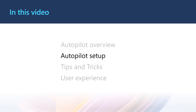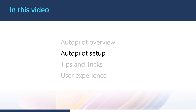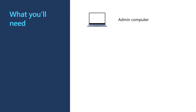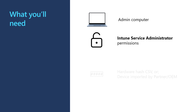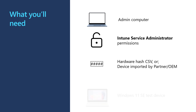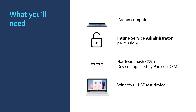Now that we know what it is and what we need before we get started, let me show you how we can configure Autopilot in Intune to make this a reality for our Windows 11 SE laptops. If you want to follow along with this walkthrough, you'll need a computer to configure Autopilot, an account with Intune service administrator permissions, a hardware hash for your Windows 11 test device or have them imported by a partner, and some Windows 11 SE test devices to test on.